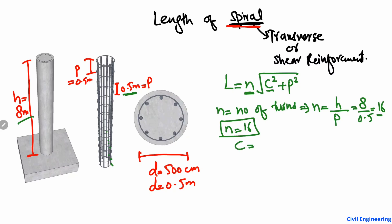Next, C is the circumference of the column. It can be found by pi times D, where D is the diameter of the column. Pi is 3.14 and D is 0.5 meters. Multiplying, we get C equal to 1.57 meters. So the circumference of the column is also now known to us.